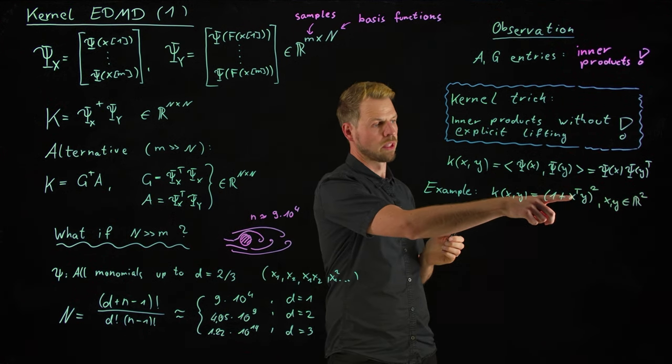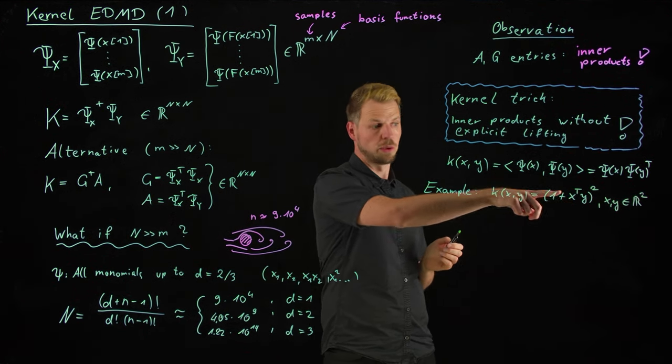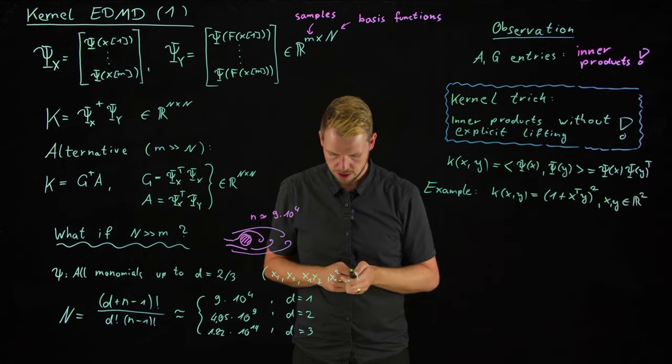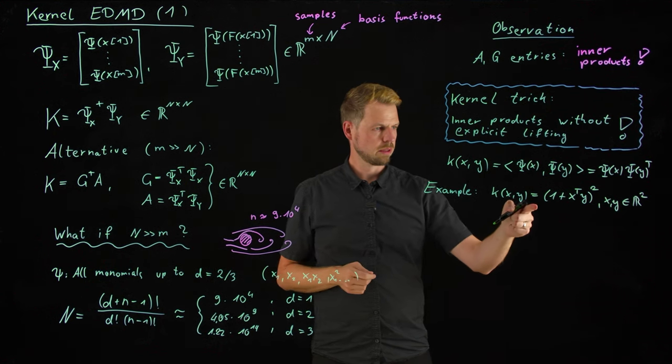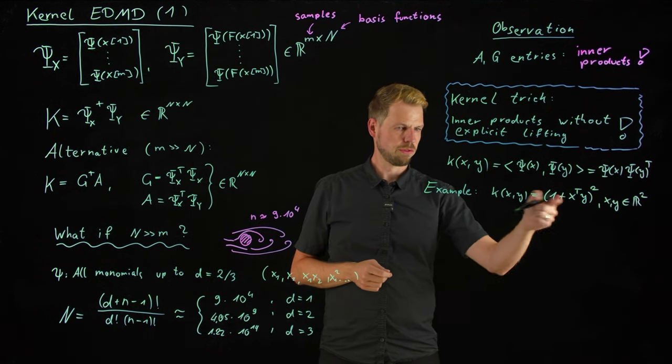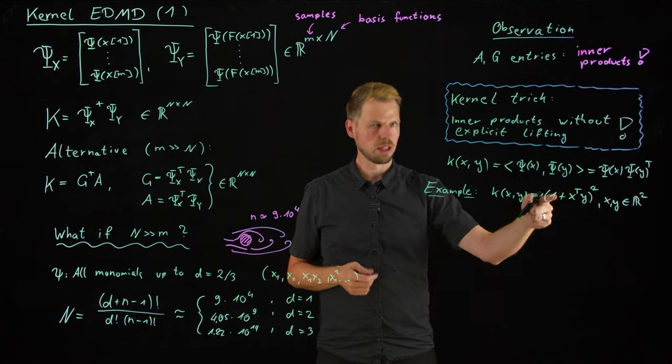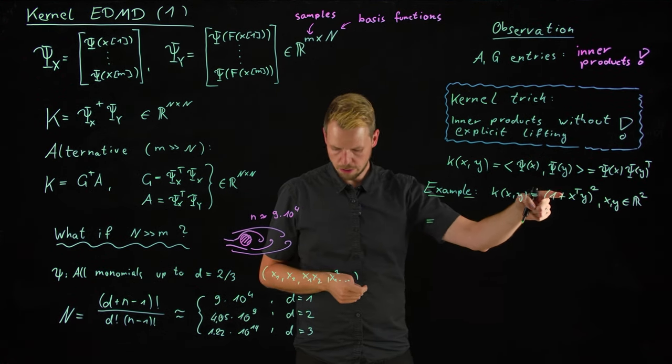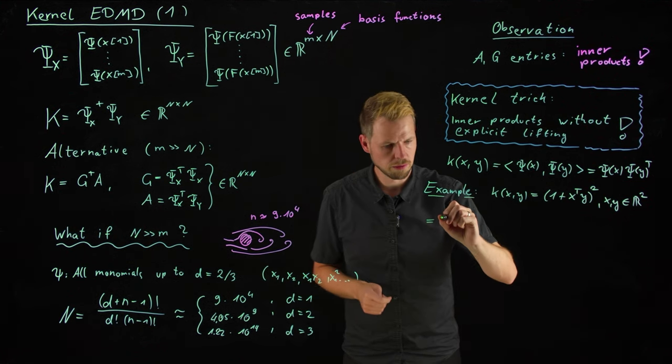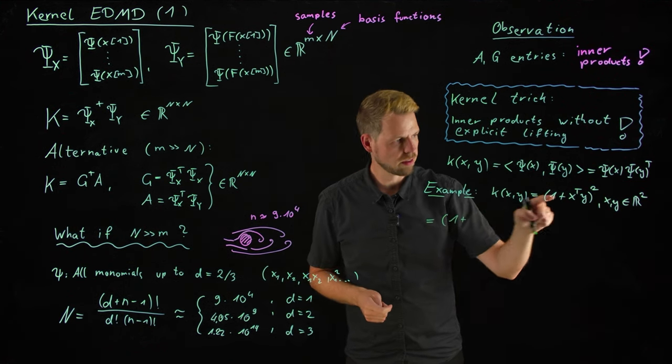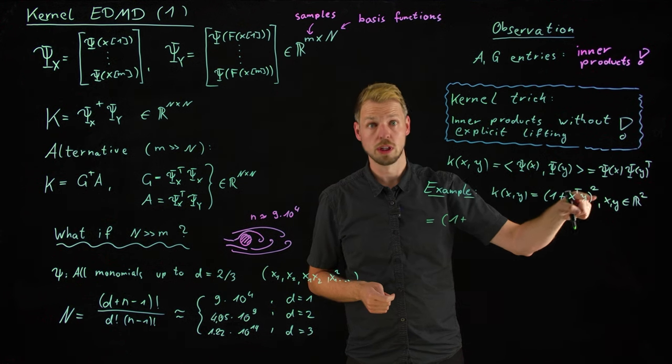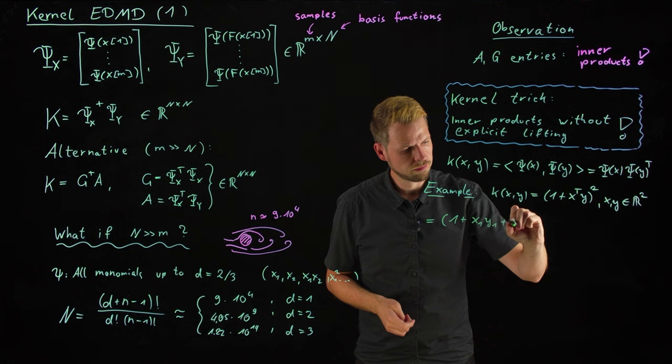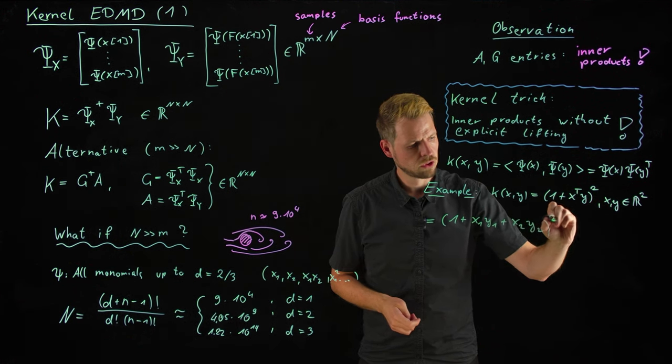It's a vector in R2, and we are considering this as our kernel function. So what you see is we are taking the inner product in between the inputs, and we would like to see what this means in terms of this lifted dictionary. So, all I need to do is to follow on this calculation and take the rules for computing these. So, first of all, I'm computing the inner product, and then I'm computing the square. So what this means would be 1 plus x1 times y1 plus x2 times y2. This is what inner product means squared.